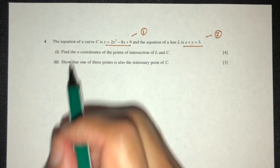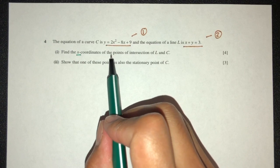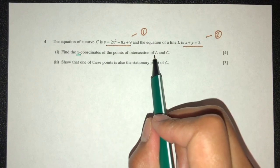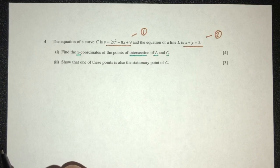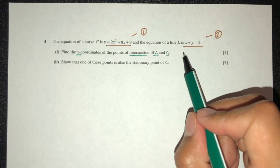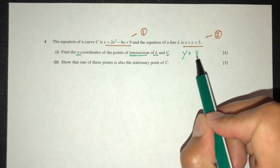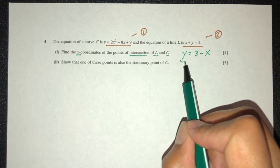Right, now part 1, find the x value of the points of intersection of L and C. Now intersection, obviously, we have to solve a simultaneous equation. So here we can make y become subject, that will be 3 minus x. Replace y in this equation.